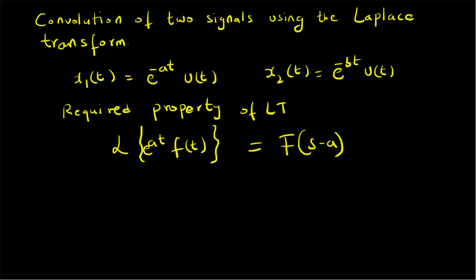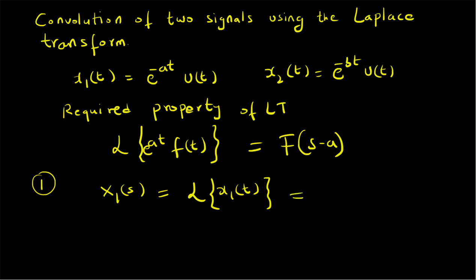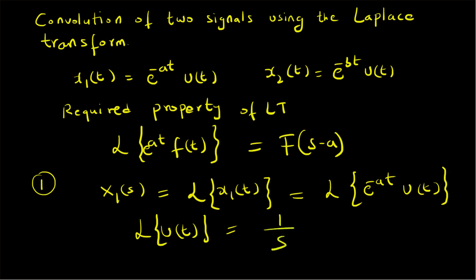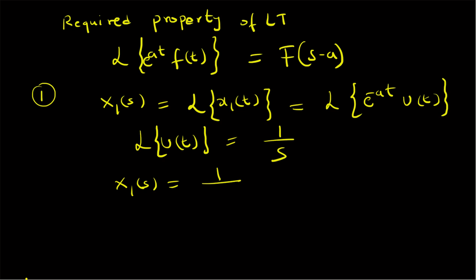Step one for finding the convolution of these two signals is to convert the two time-domain signals into the Laplace domain. We find X1(s), the Laplace transform of x1(t) = e^(-at) · u(t). Using the translation property, this gives F(s + a) where F(s) is the Laplace transform of u(t). Recall that the Laplace transform of u(t), the unit step signal, is 1/s. Therefore X1(s) = 1/(s + a).